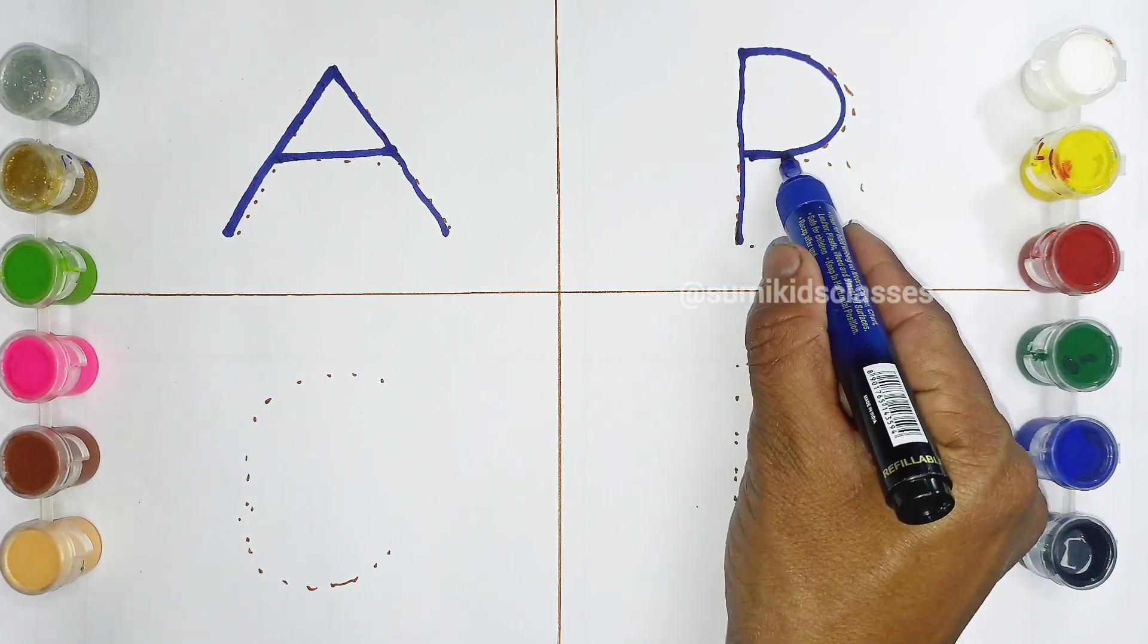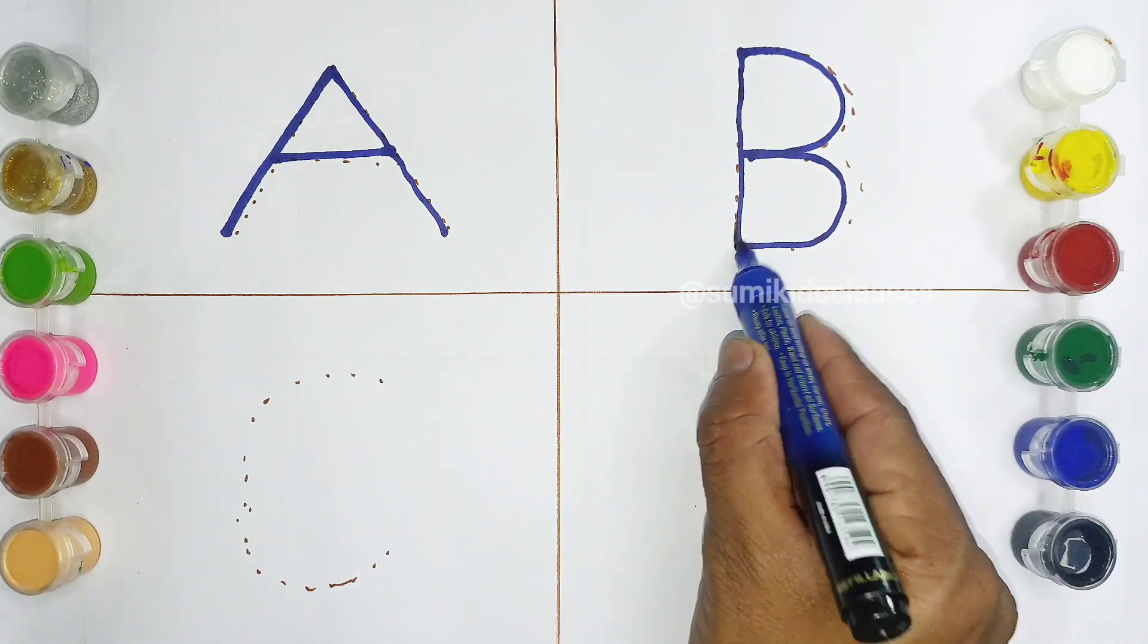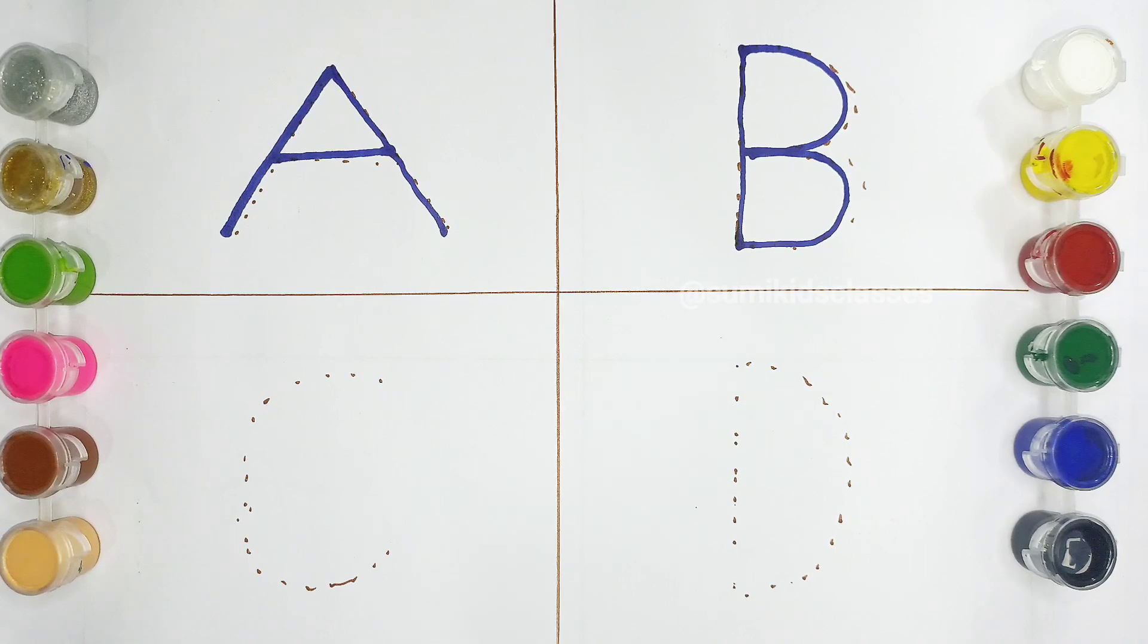From middle, draw another curve down and close. And it's done. It's letter B. Very good.